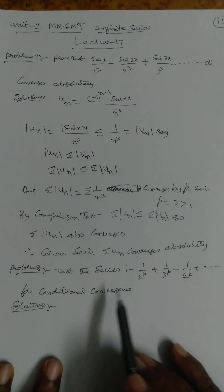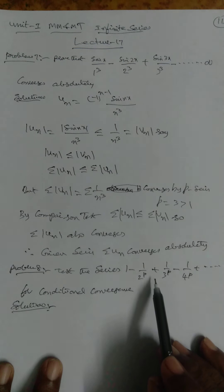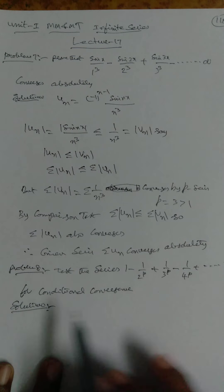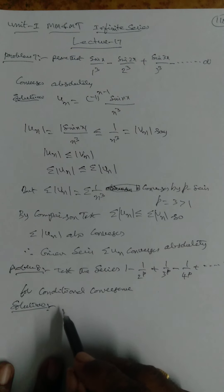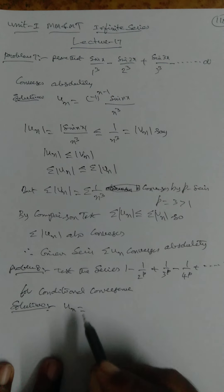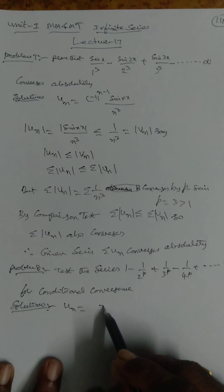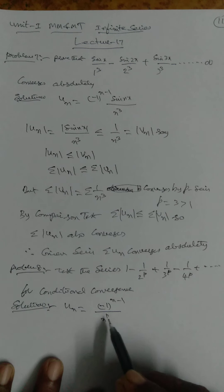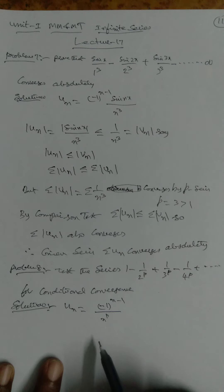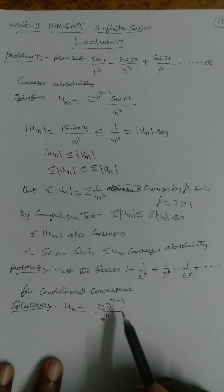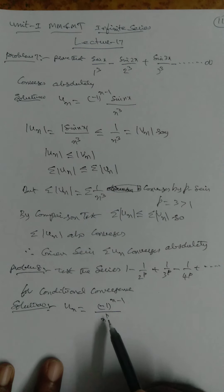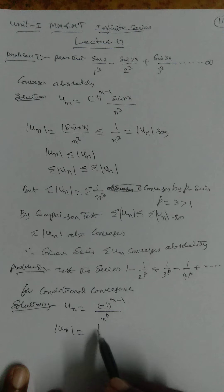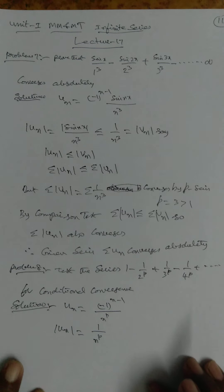Problem 8. Test the series 1 - 1/2^p + 1/3^p - 1/4^p + ... to infinity for conditional convergence. So u_n = (-1)^(n-1) / n^p. For n=1 we get 1; for n=2 we get -1/2^p. So |u_n| = 1/n^p.